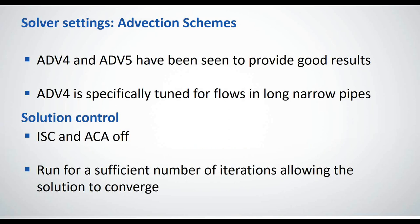So other solver settings, advection schemes, ADV4 and ADV5. Me and Matt have used both in these examples and they both perform well, but ADV4, if you notice in the help documentation, it says it's specifically tuned for flows in long narrow pipes. And that's exactly what we're doing. So we might as well take advantage of it. And it is giving nice results. Further to that, you want to turn off your intelligent solution control and automatic convergence assessment. It seems like the relaxation factors, if we're using intelligent solution control, after a certain number of iterations trying to reach convergence, it seems to actually push the results off from the results that we're looking for.